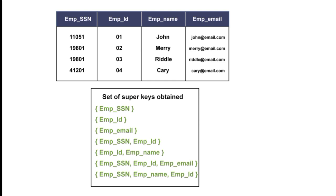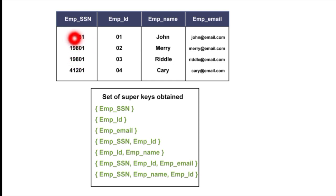For example, employee SSN should be made up of digits between 0 and 9. Whatever employee SSN you take, all values are in the range 0 to 9. So, every value of an attribute should be a single atomic value.